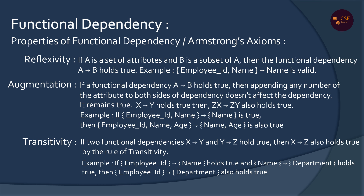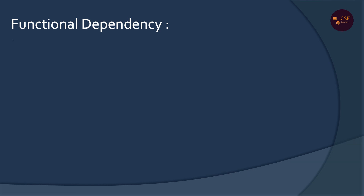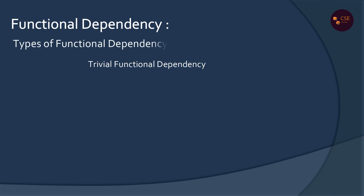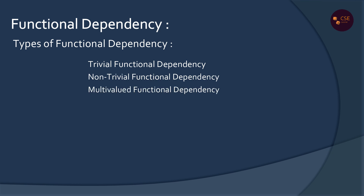These are the properties of Functional Dependencies. There are four types of Functional Dependencies: Trivial Functional Dependencies, Non-Trivial Functional Dependencies, Multivalued Functional Dependencies, and Transitive Functional Dependencies.